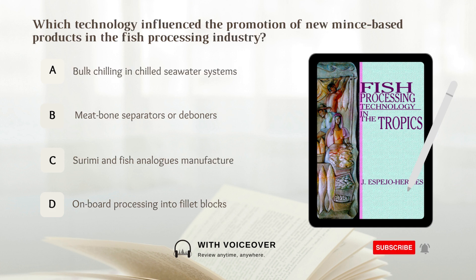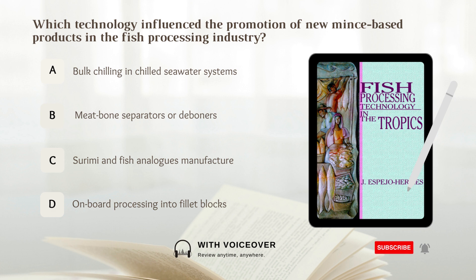Which technology influences the promotion of new means-based products in the fish processing industry? A. Bulk chilling in chilled seawater systems. B. Meat bone separators or deboners. C. Surimi and fish analogues manufacture. D. On-board processing into fillet blocks. Answer: B. Meat bone separators or deboners influenced the promotion of new means-based products in the fish processing industry.